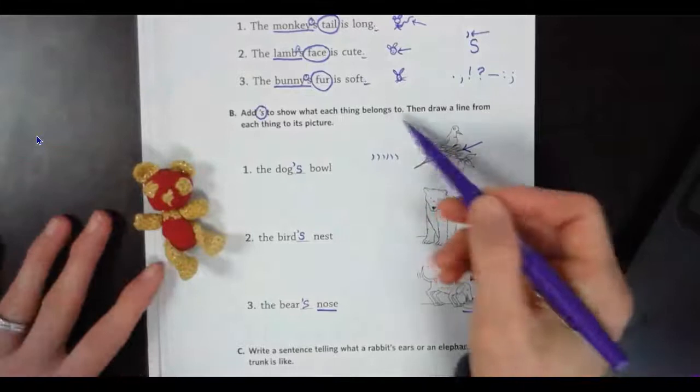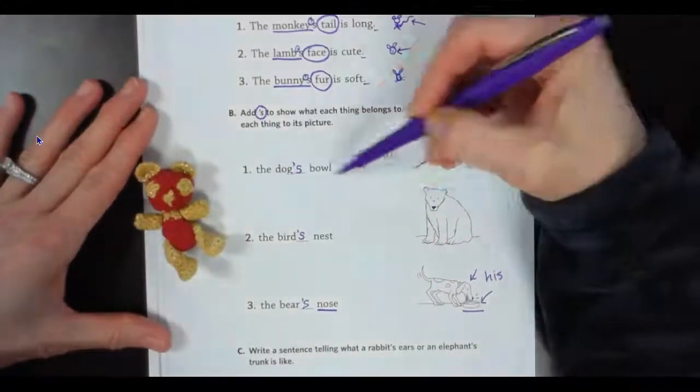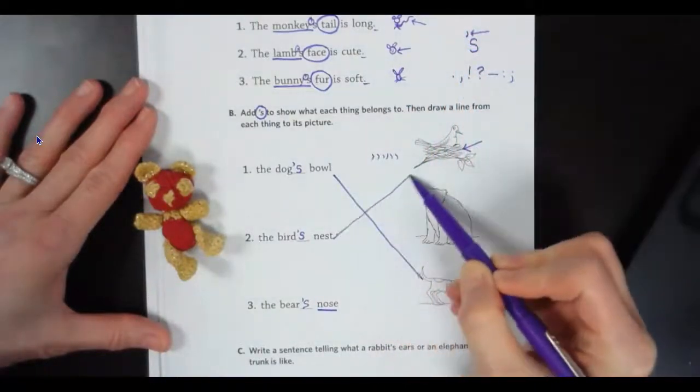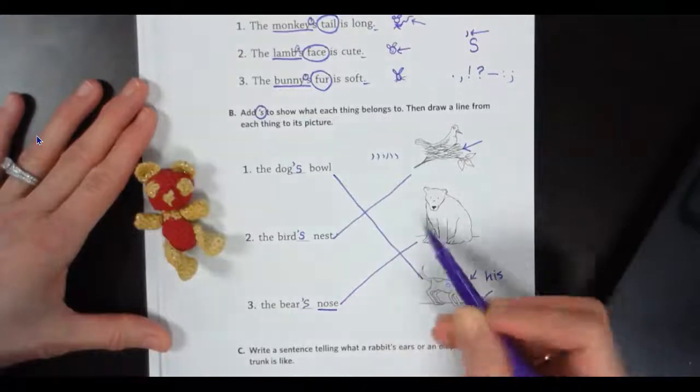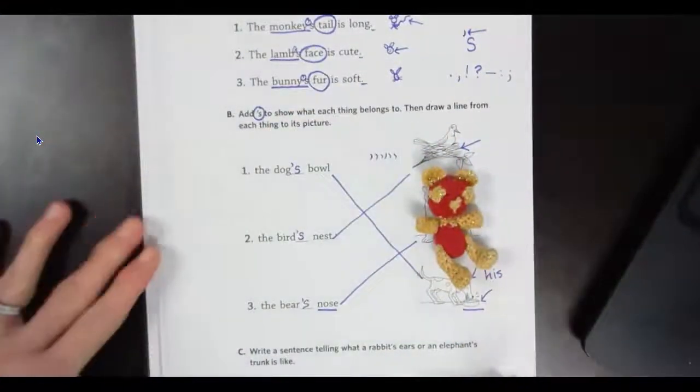Now, they want us to draw a line from each thing to its picture, so we can just do that real quick. We've got the dog and the dog, so the dog and the dog bowl here, the bird and the bird nest here, and Sparkles' nose, and, well, we've got a polar bear sitting in, but we know that we really meant Sparkles right here, right?